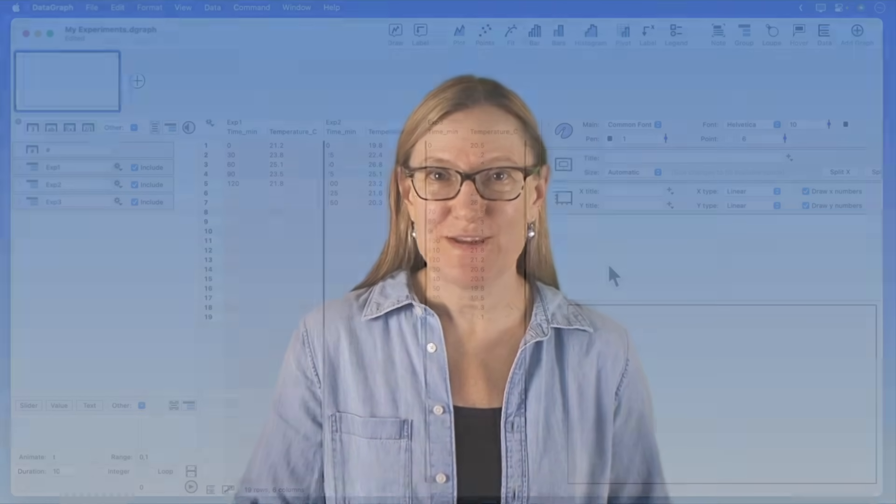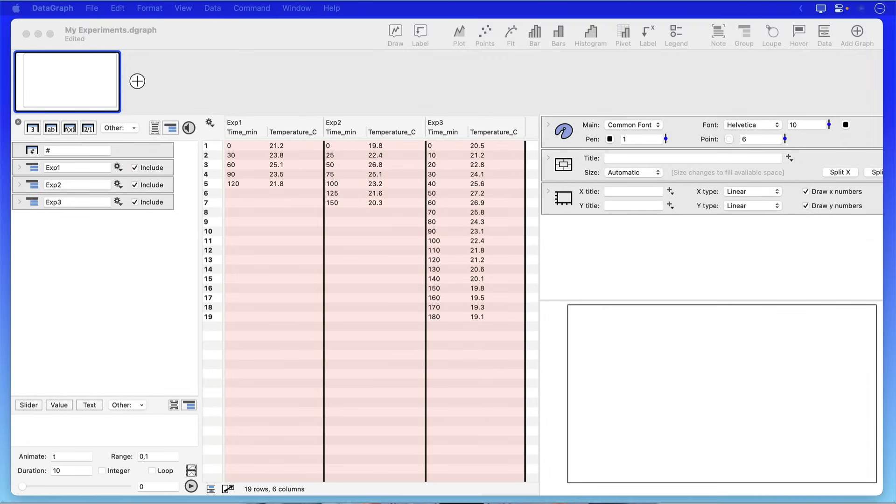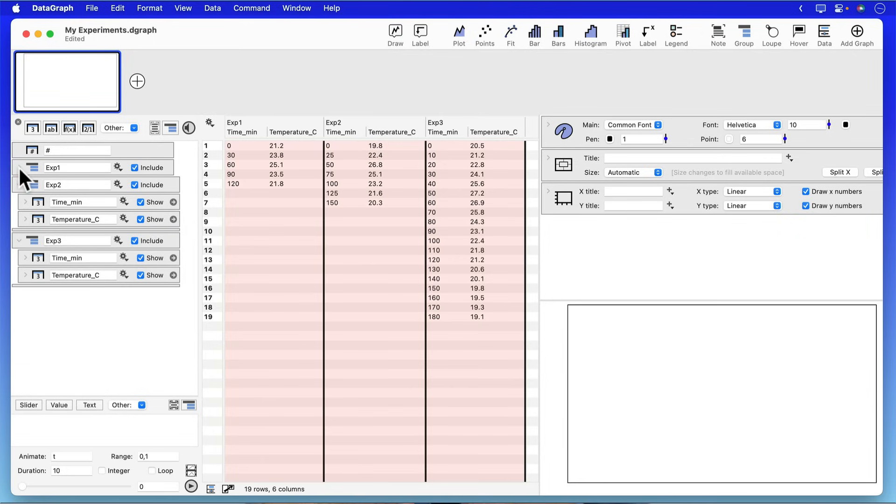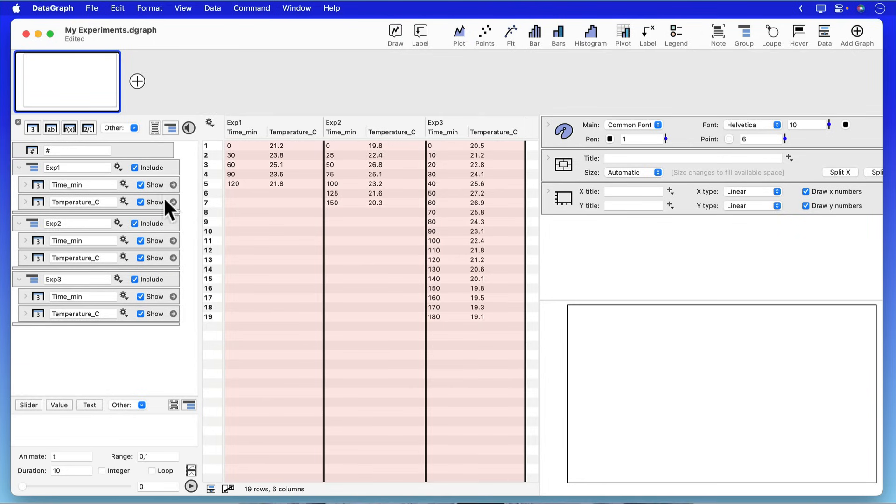Here you're now looking at the DataGraph user interface where we have all of our data arranged. In DataGraph we're able to set things up into groups. We don't use tabs like you do in Excel, but groups are kind of the analog and they're great because if you only need two columns per group then you only set up two columns in each group. So here I have my first experiment with my two columns, second experiment two columns, and my third experiment with two columns.